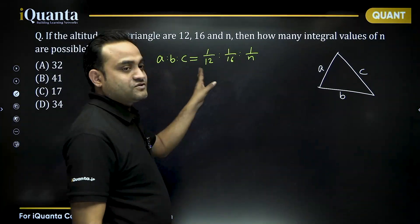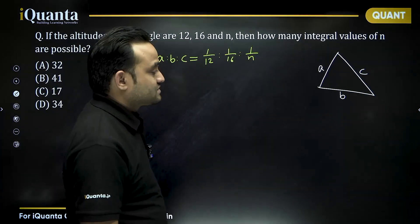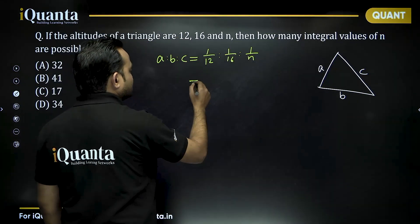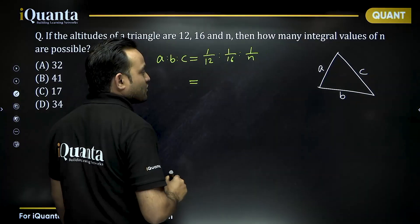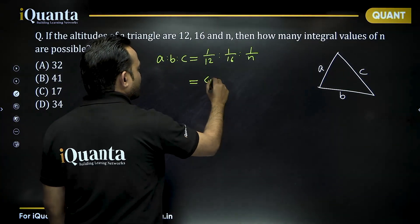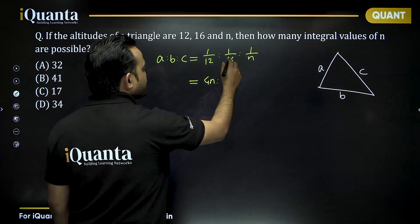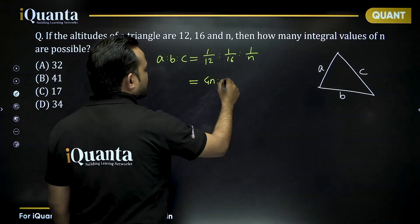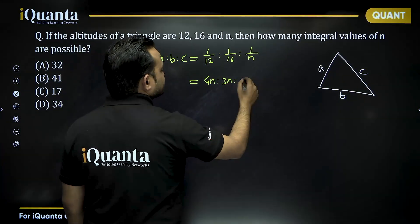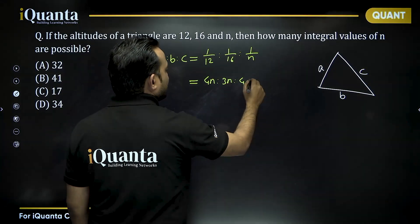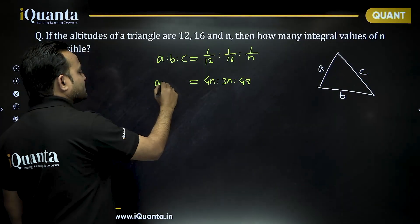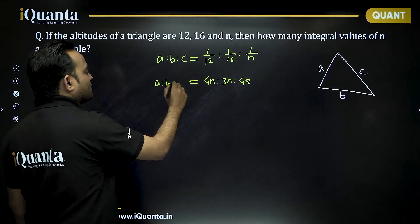Multiplying all these values by 48n, we get the ratio of side lengths as 4n : 3n : 48.